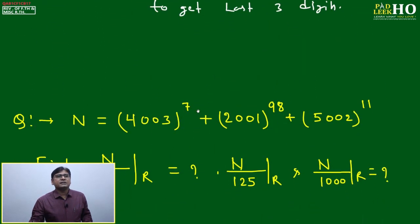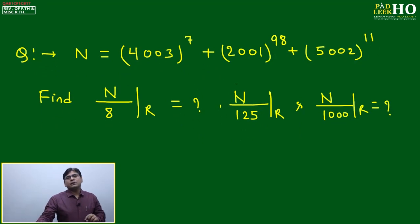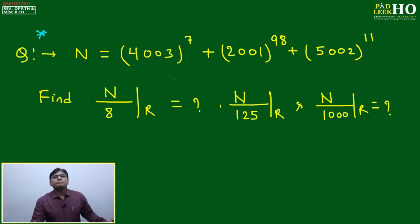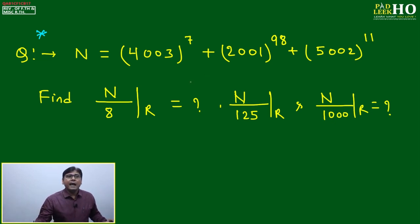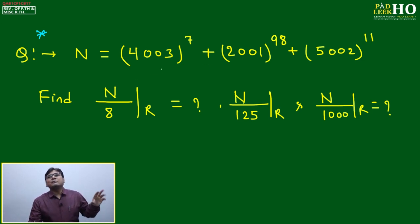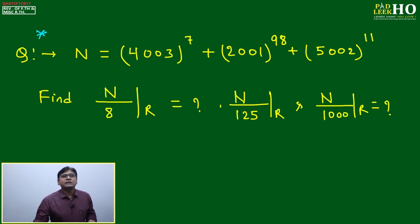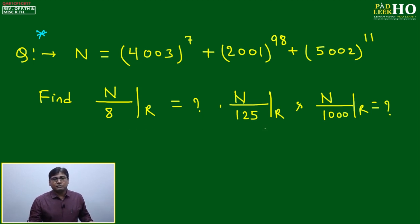I've framed one question that will address all doubts related to last three digit techniques and cover all CAT-level variations. Note: this combined question is beyond CAT level — for CAT, just one term would be sufficient. But combining terms gives a complete picture of all scenarios.